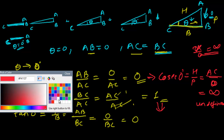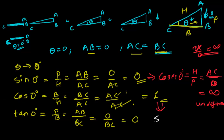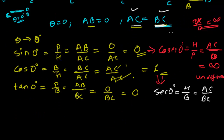Now find the value of sec zero. Sec zero equals H upon B — hypotenuse upon base. Hypotenuse is AC and base is BC. Since AC and BC are both equal when theta is zero, AC upon BC gives AC upon AC, which equals one. So sec zero degree equals one.